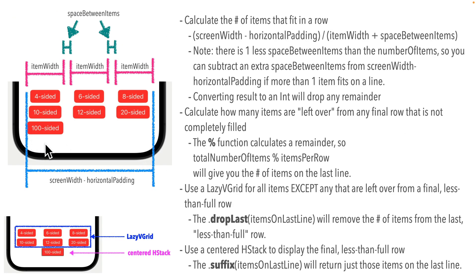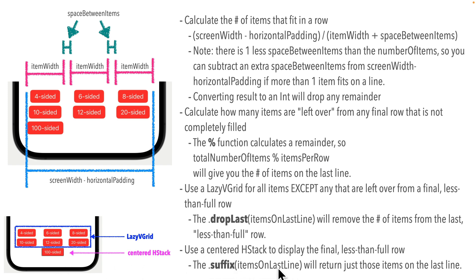We can use a lazy grid to display all items except the last incomplete row. To do this we'll use a new method called drop last — we'll use that in our forEach to skip those final items from the lazy VGrid. Then we populate a centered HStack using the dot suffix method on our array, passing in just the number of items in the last line. This gives us the perfectly centered result we want. Let's code this up.